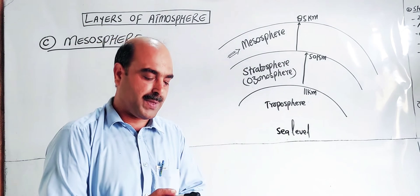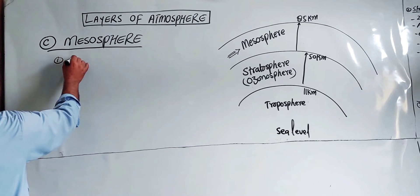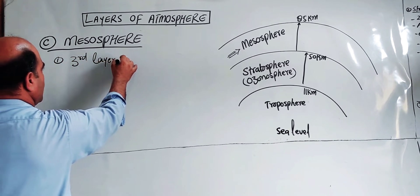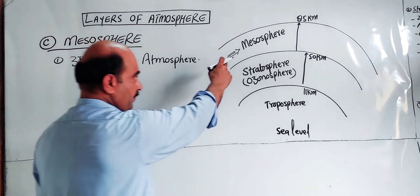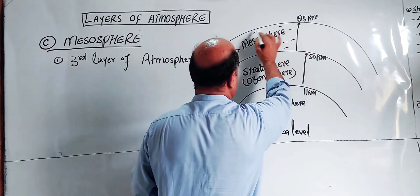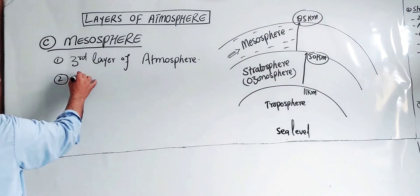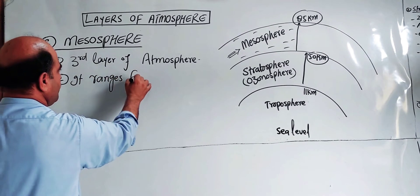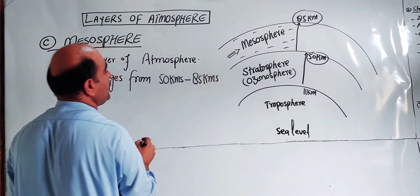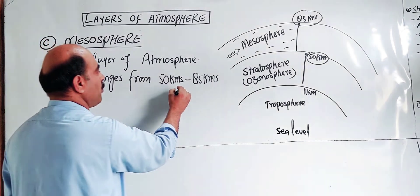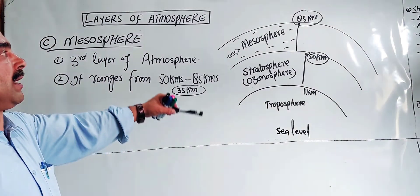The characteristics of the mesosphere are as follows. First, the mesosphere is the third layer of atmosphere. Second, regarding its range: the mesosphere ranges from 50 kilometers to 85 kilometers. The total range is 35 kilometers — that is the area or extent of the mesosphere.